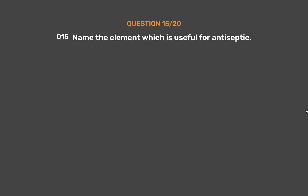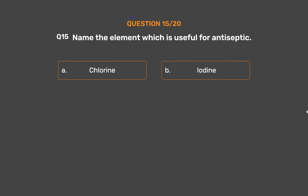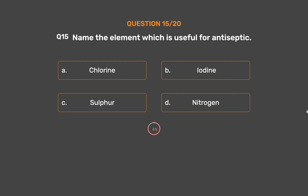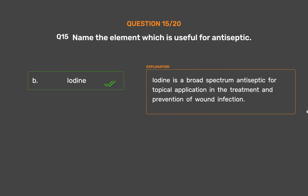Question number 15. Name the element which is useful as an antiseptic. Option A: Chlorine. Option B: Iodine. Option C: Sulfur. Option D: Nitrogen. The correct answer is Option B: Iodine. Iodine is a broad-spectrum antiseptic for topical application in the treatment and prevention of wound infection.